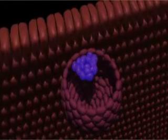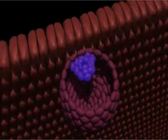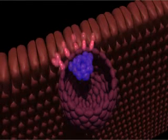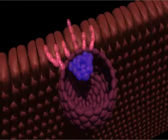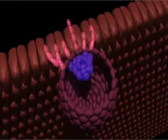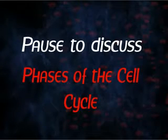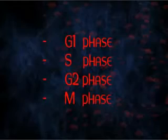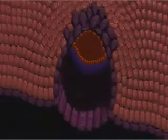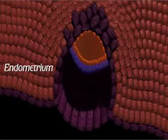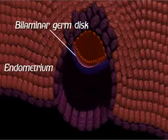It is the cells of the embryoblast that will now form the embryo proper. The trophoblast cells are associated with implantation of the embryo and then result in the formation of the placenta. At about day 8 of gestation, the cells of the embryoblast differentiate into a two-layered disc called the bilaminar germ disc.